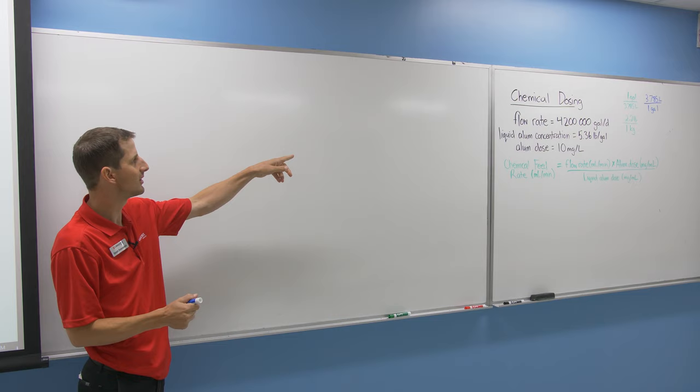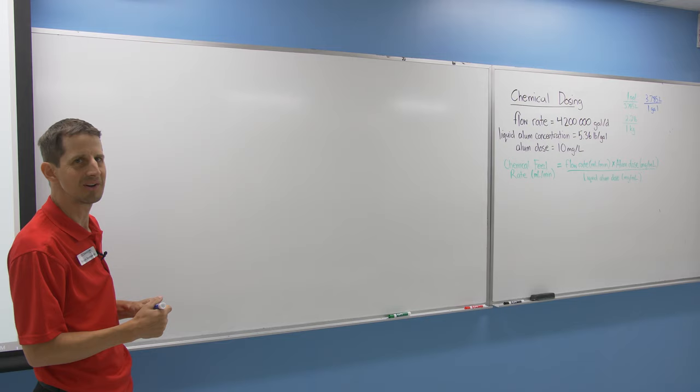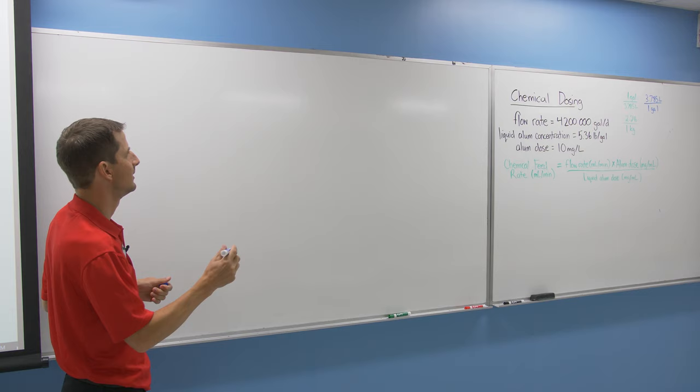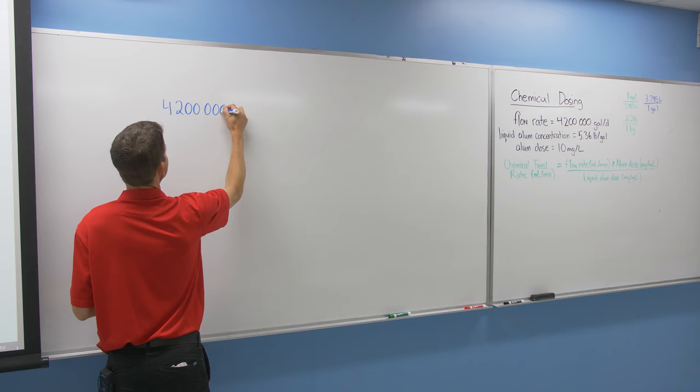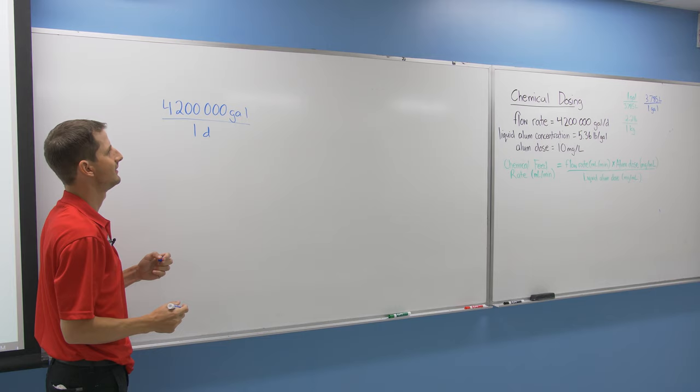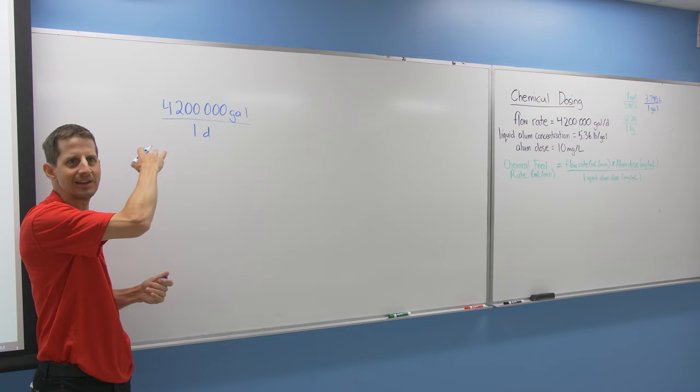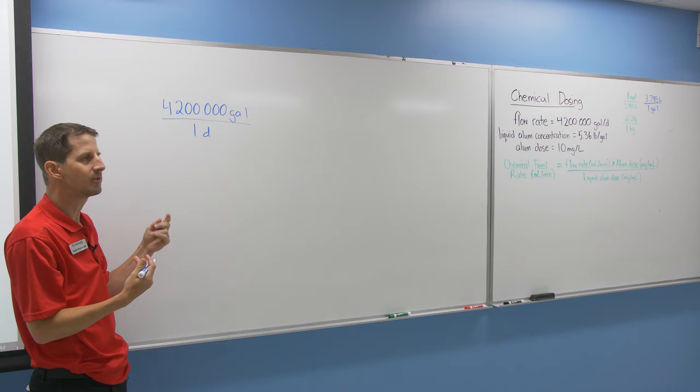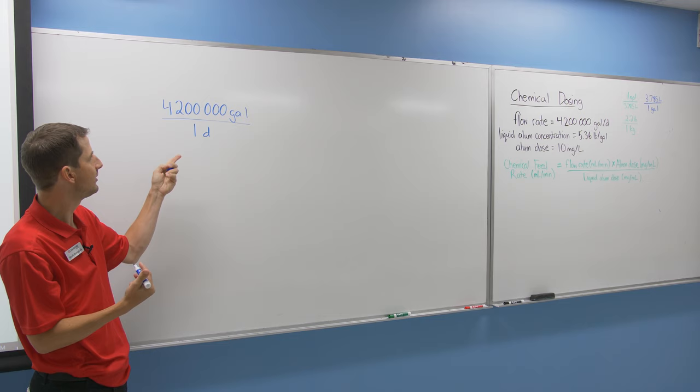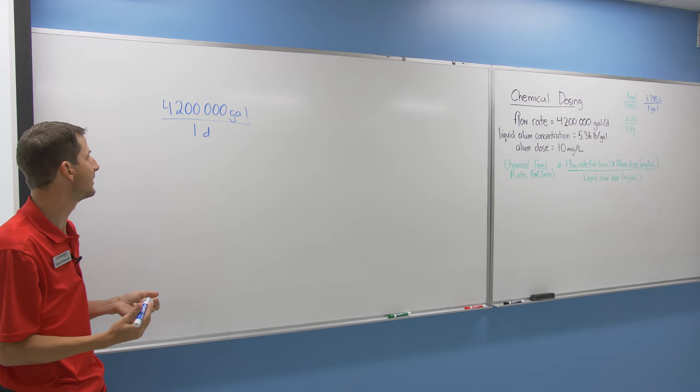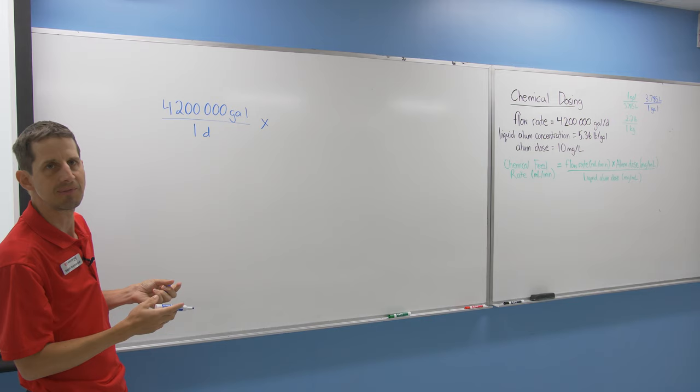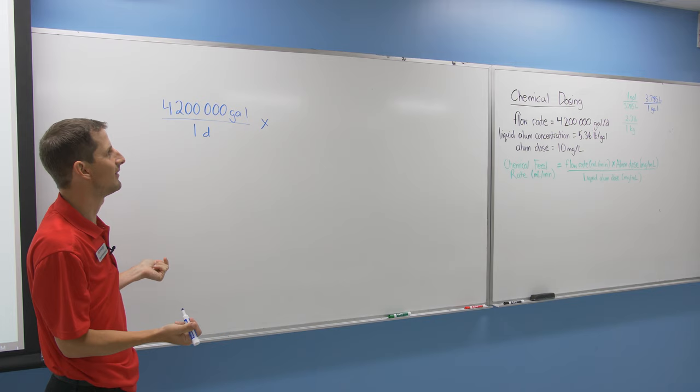The first conversion we need is the flow rate of 4.2 million gallons per day to milliliters per minute. So we're changing from imperial to metric and within the metric system. I'll write 4,200,000 gallons over 1 day. Now we need conversion factors. We have 3.785 liters in a gallon. The trick is: where do I put the 3.785, on top or bottom? For unit conversions to work, we need to cancel units. Gallons is on top, so the other gallons has to be on the bottom.